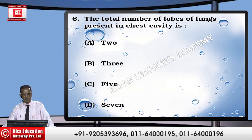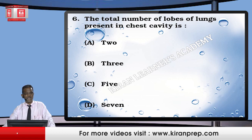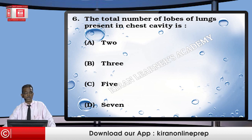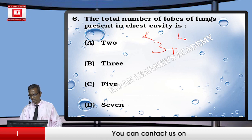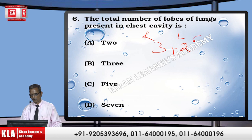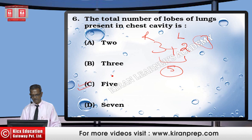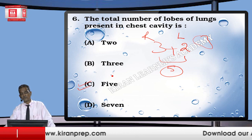Question: The total number of lobes of the lungs spread in the chest cavity is two, three, five, or seven? Each lung consists of lobes. On the right side of the thoracic cavity there are three lobes, and on the left side there are two lobes, because the heart also occupies space. Hence the total number of lobes comes out to be five. The correct answer is C — five, with three on the right and two on the left.